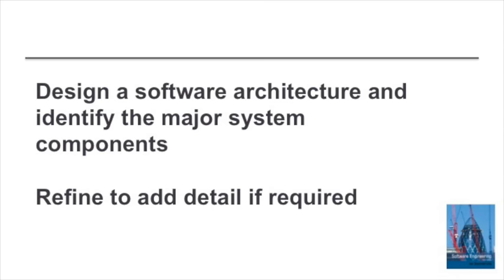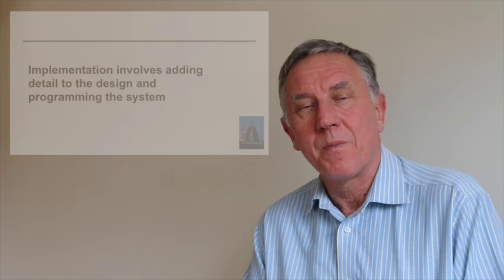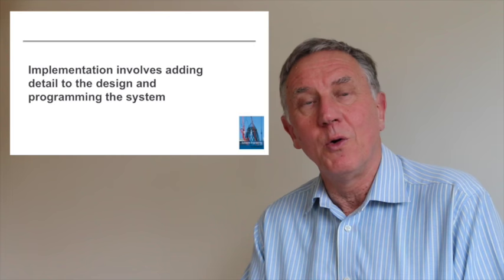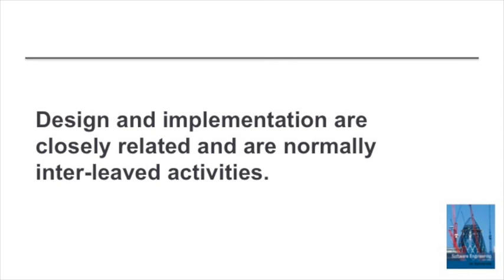Software design and implementation starts with working out an architecture for the system — an overall structure for the system and its major components. Then, depending on the development process, maybe defining that design in more detail at different stages. Implementation is the familiar programming process where we are writing programs to build the system. What we find now is that design and implementation are typically interleaved activities.